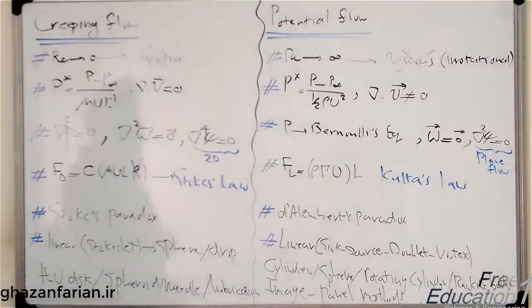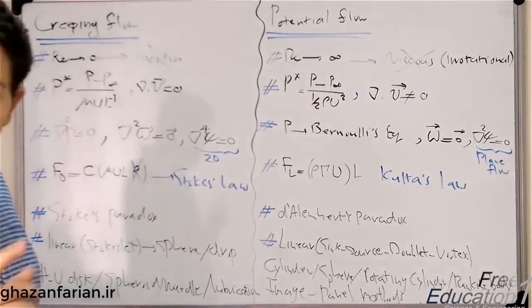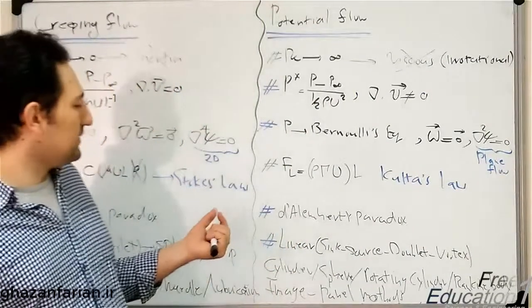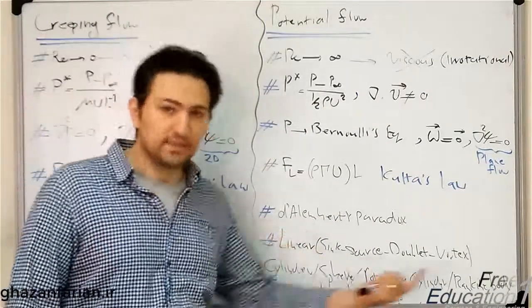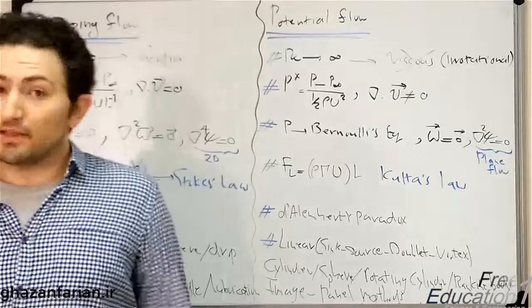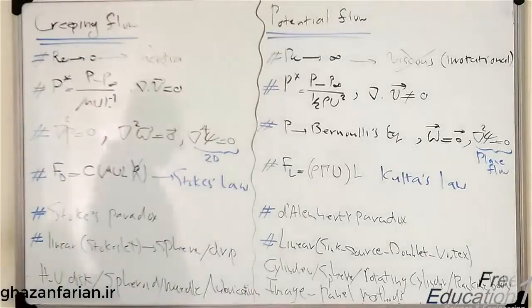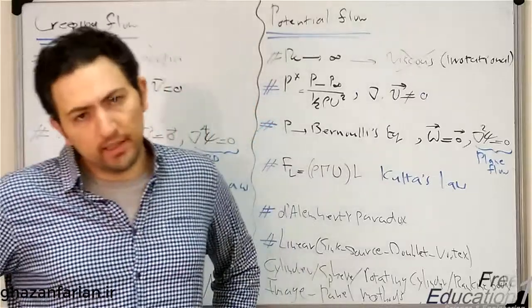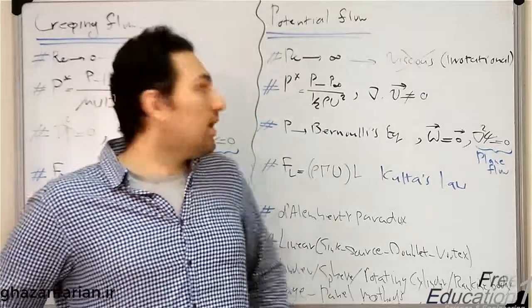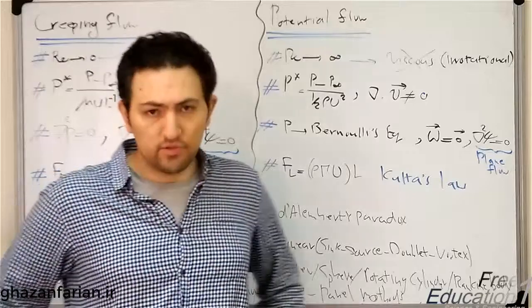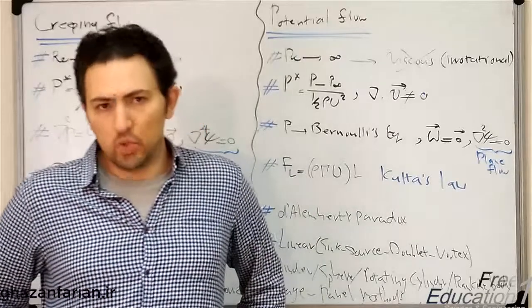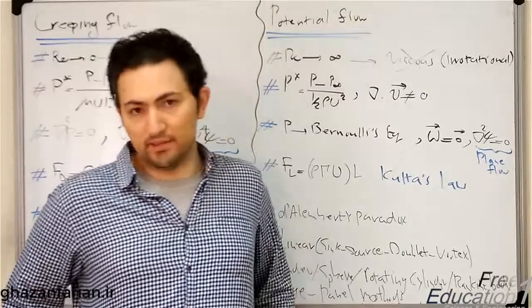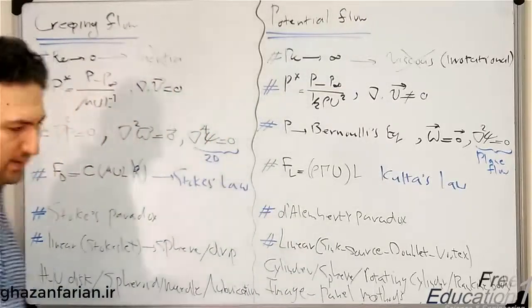But here in potential flow we have D'Alembert's paradox, which is again very well known, which says that the drag force exerted on an arbitrary object inside the potential flow is zero. It's again a paradox because apparently it's not zero in the real application.